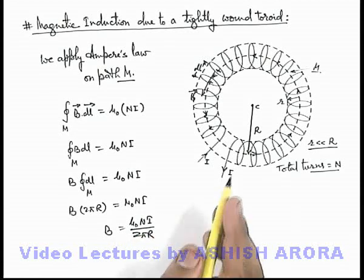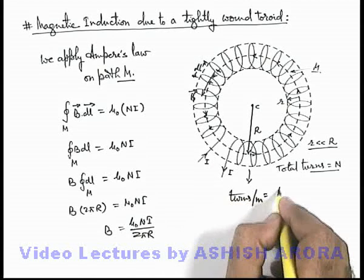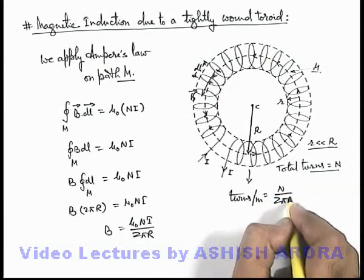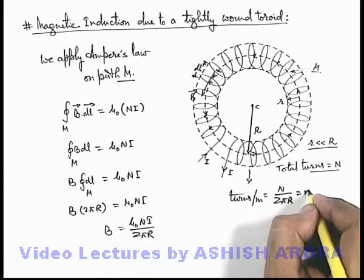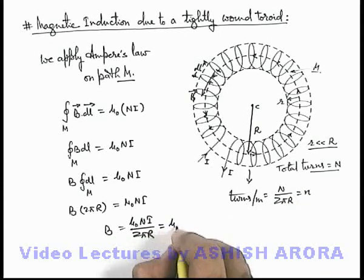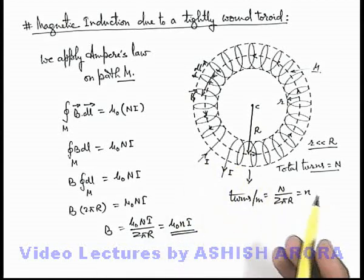Here, if these are closely packed, turns per unit length can be written as N/2πr, because the core is very small. So if this is denoted by small n, we can write it also as μ₀nI, which was the result of a long solenoid, the magnetic induction inside the solenoid.